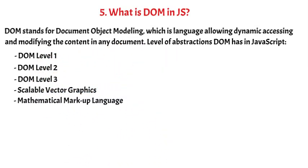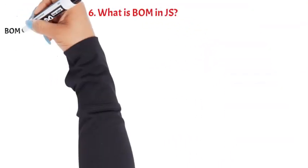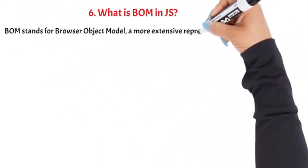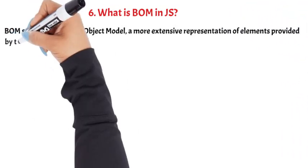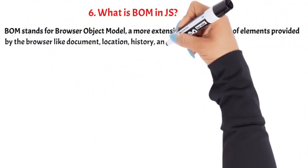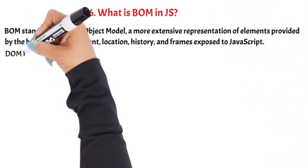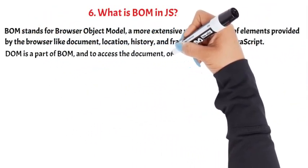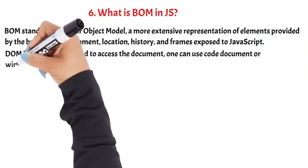Question 6: What is BOM in JS? BOM stands for Browser Object Model, a more extensive representation of elements provided by the browser — like document, location, history, and frames — exposed to JavaScript. DOM is a part of BOM, and to access the document one can use window.document.